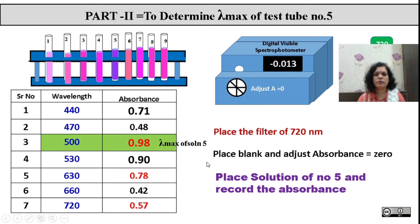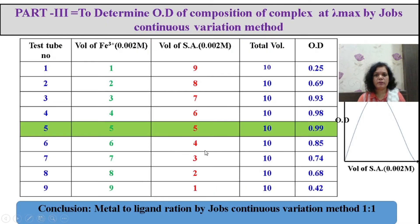Since 500 nm can be chosen as the lambda max wavelength, we keep this wavelength constant and for all solutions prepared we will measure the absorbance. We have done variation with the metal concentration, variation with the ligand concentration, and metal-to-ligand continuous variation for both.